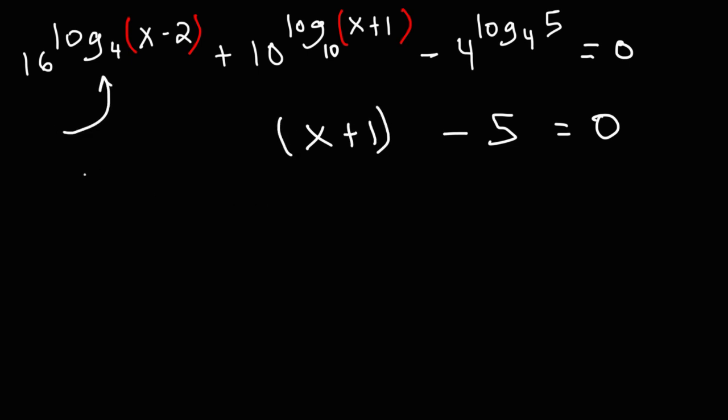Now, for the next one, we need to do some work because 16 and 4 don't match. However, we could change 16 into base 4 because we know that 4 squared or 4 times 4 is 16. So let's replace 16 with 4 squared. So we have 4 squared raised to the log base 4 of x minus 2.